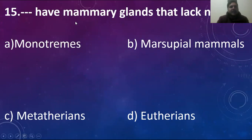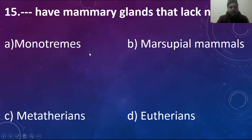Blank have mammary glands that lack nipples. Which kind of mammals have mammary glands but no nipples? Either these are monotremes, marsupial mammals, metatherians, or eutherians. Eutherians have proper nipple structure, and metatherians and marsupials are the same. So the right answer is monotremes.